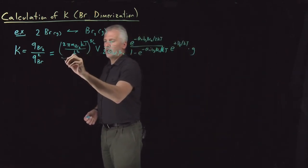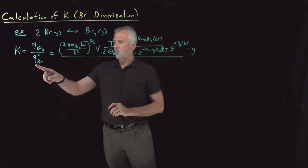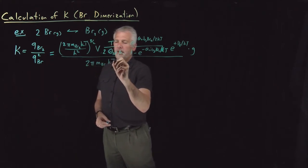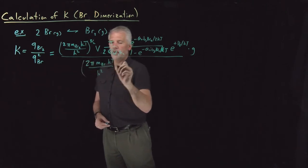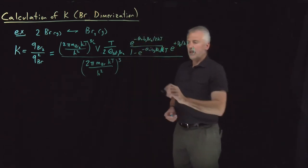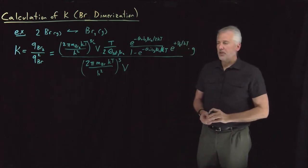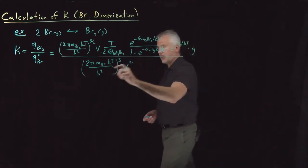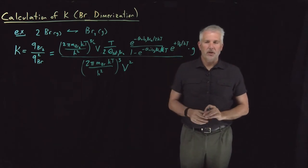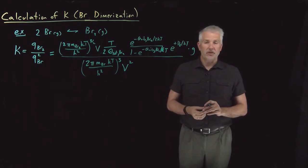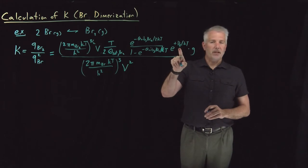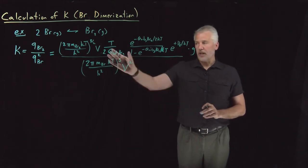The denominator, luckily, is not quite as ugly. Partition function for Br, I can write the translational piece, 2πmkT over h² raised to the 3 halves, but I'm just going to square it in the denominator, so that 3 halves becomes a 3. Also, I've got a volume that shows up in the translational partition function, and that gets squared because the whole partition function is being squared. For the rotational part and vibrational part, and for the bond dissociation part, I don't have to worry about those at all. This is a monatomic atom, so it doesn't have any rotational states. It doesn't have any bond to vibrate. It doesn't have any bond to dissociate and worry about a bond dissociation energy, so I don't have to worry about these terms at all.